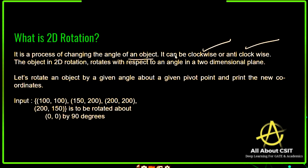Let's rotate an object by a given angle about a given pivot point and find the new coordinates. The pivot value means one point is given, and that point has to be rotated by an angle. They are given some input values: 100, 100; 150, 200; 200, 200, and so on.